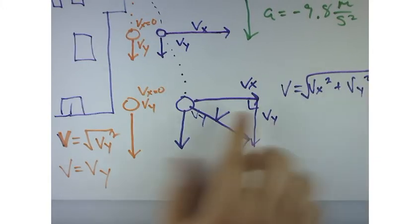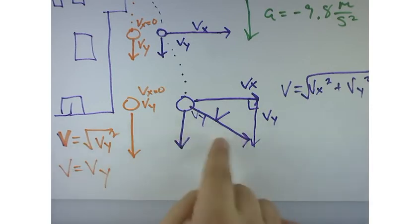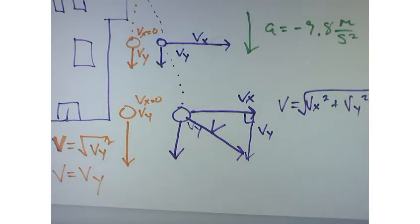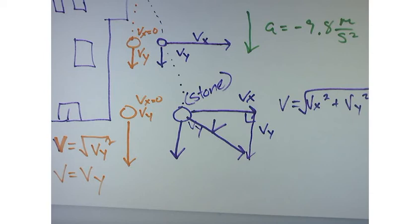So the overall velocity V would be greater for the stone. So this would be greater for the stone.